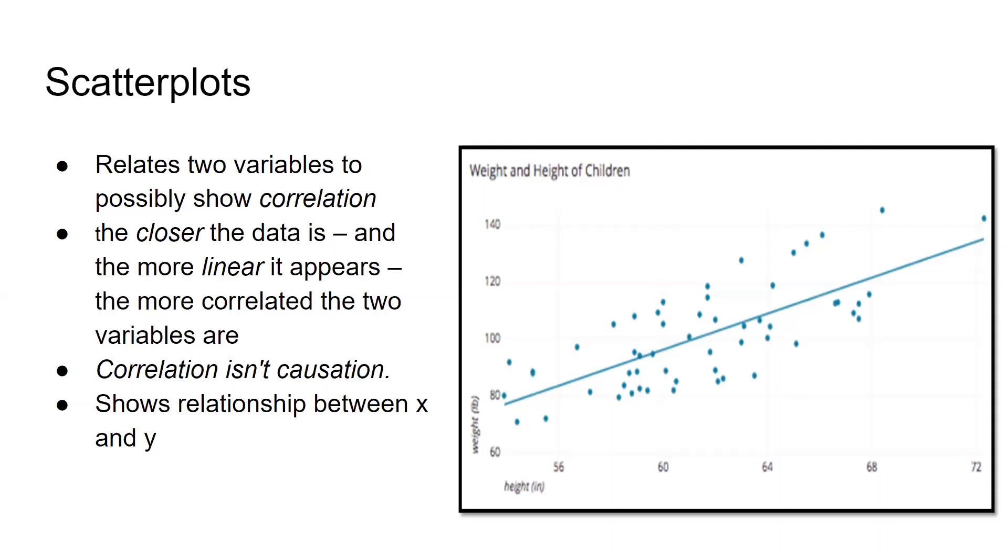What a scatter plot generally does is show the relationship between two variables. Where the x-axis, the one on the horizontal, the one that's flat, and then you have the y-axis, the vertical axis. In this case the y-axis is your weight and the x-axis is your height.